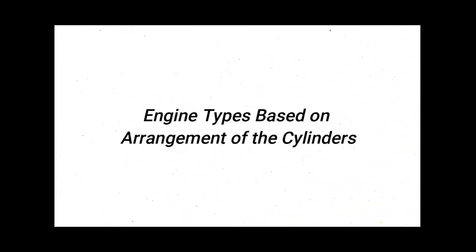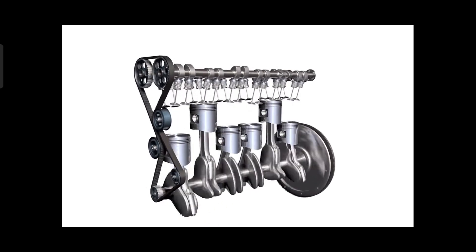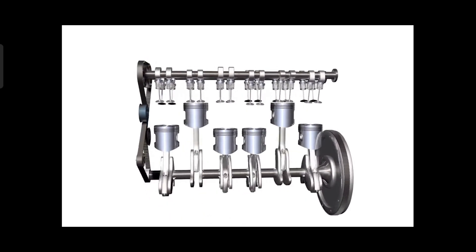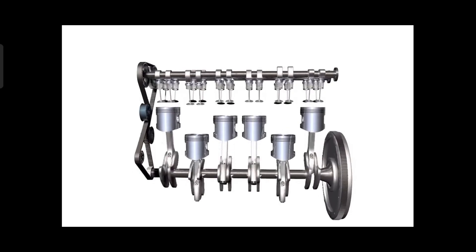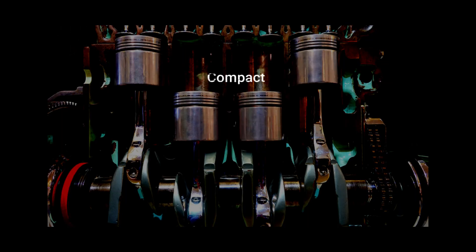Inline engines cylinders are arranged in a straight line one behind the other along with the length of the crankshaft. Inline four is the most popular in the automotive industry as it is compact, fuel efficient, and gives a higher power to weight ratio than flat six or eight engines.